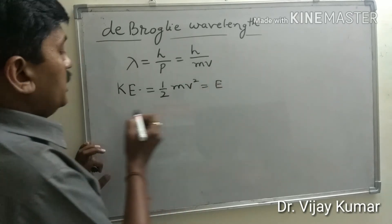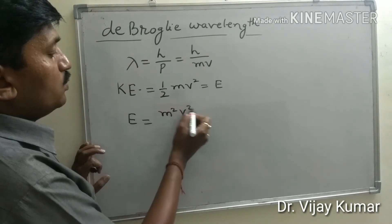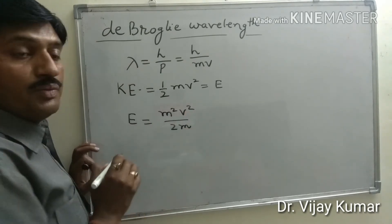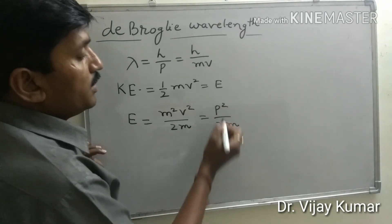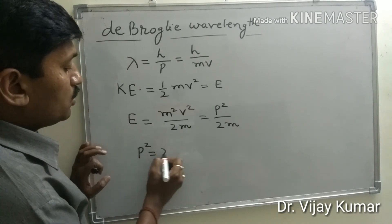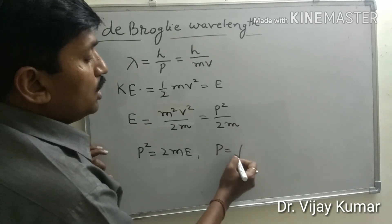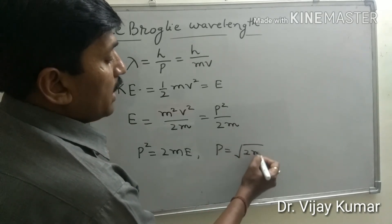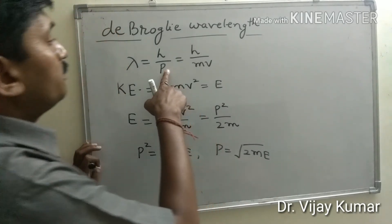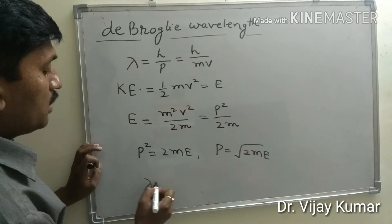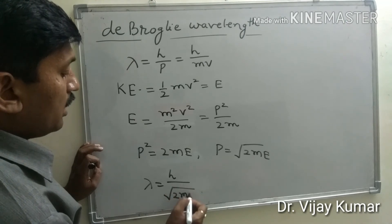We can also write kinetic energy as m squared v squared upon twice m, or p squared upon twice m, and p squared equals twice m times E. Therefore p equals under root of two m E. Putting this value of p into the equation, wavelength becomes lambda equal to h upon under root twice m E.